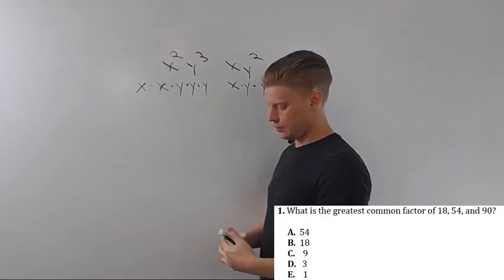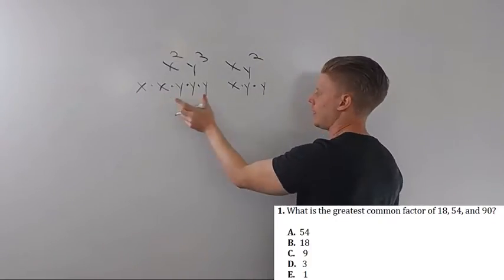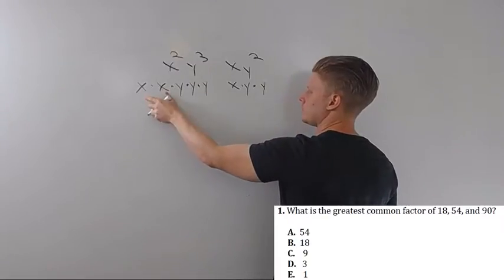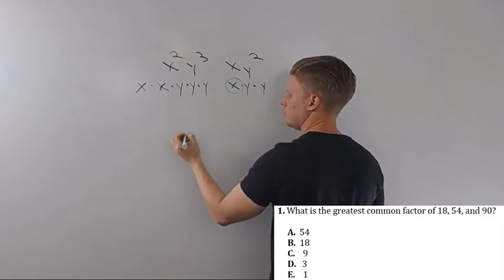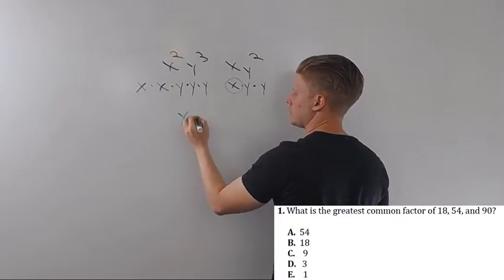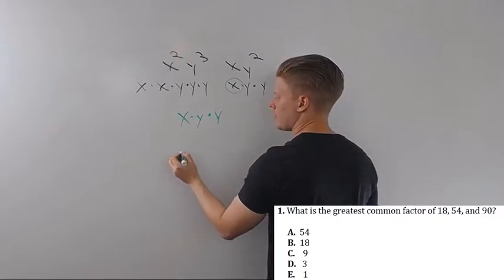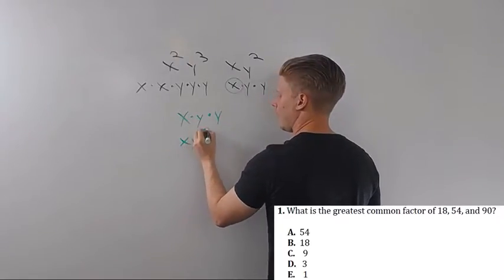So using what we just did, I can say, well, I have two unique factors. I've got x's and I've got y's. I've got two x's here. I've got one here. I'll take that one. I've got three y's here. I've got two here. I'll take those two. And my greatest common factor will be x, y squared.